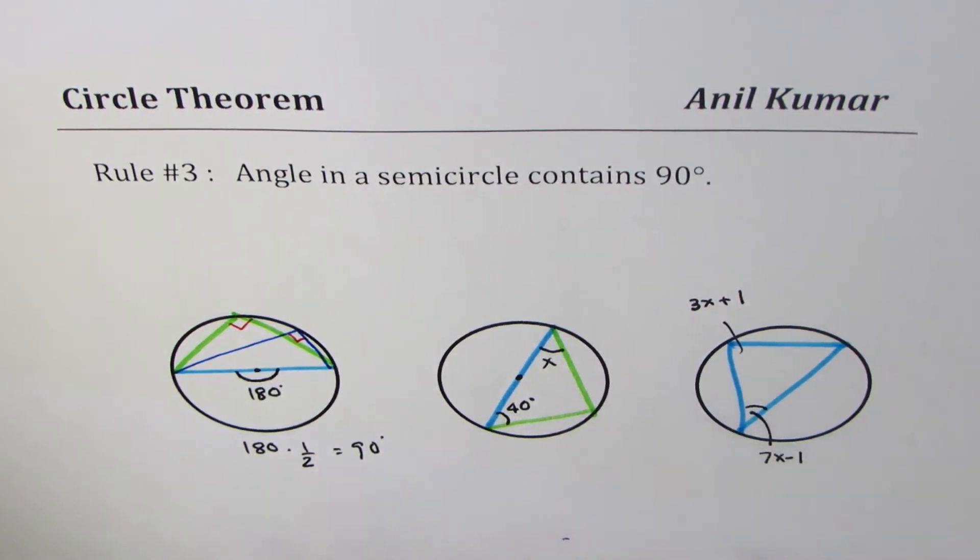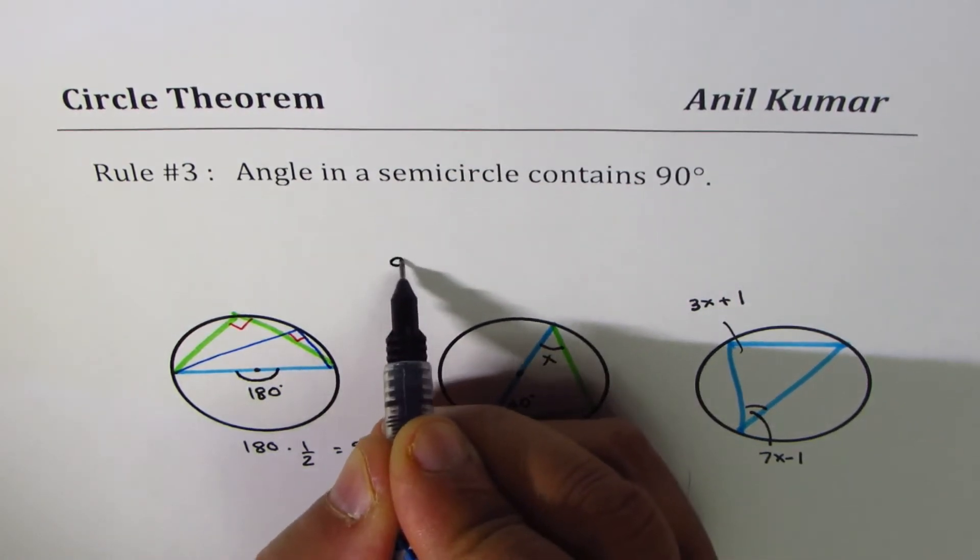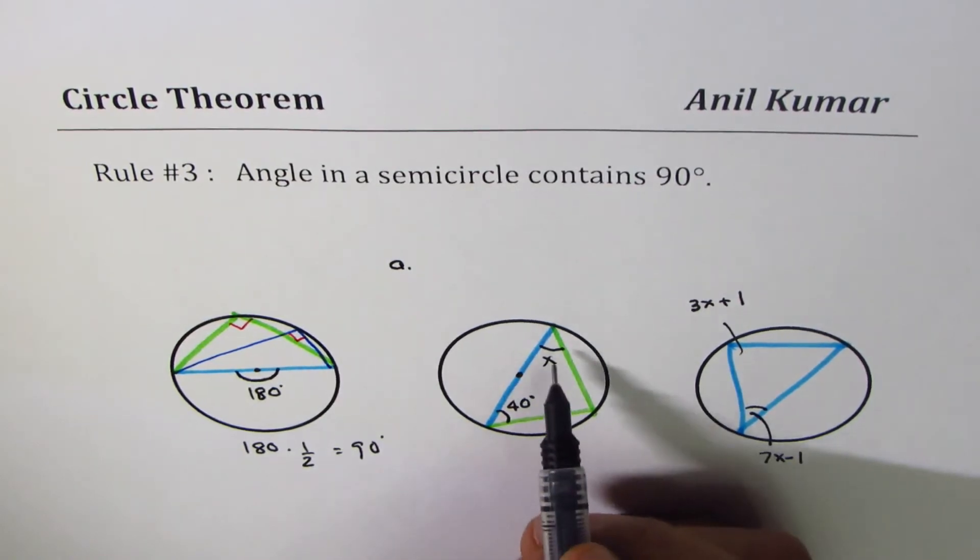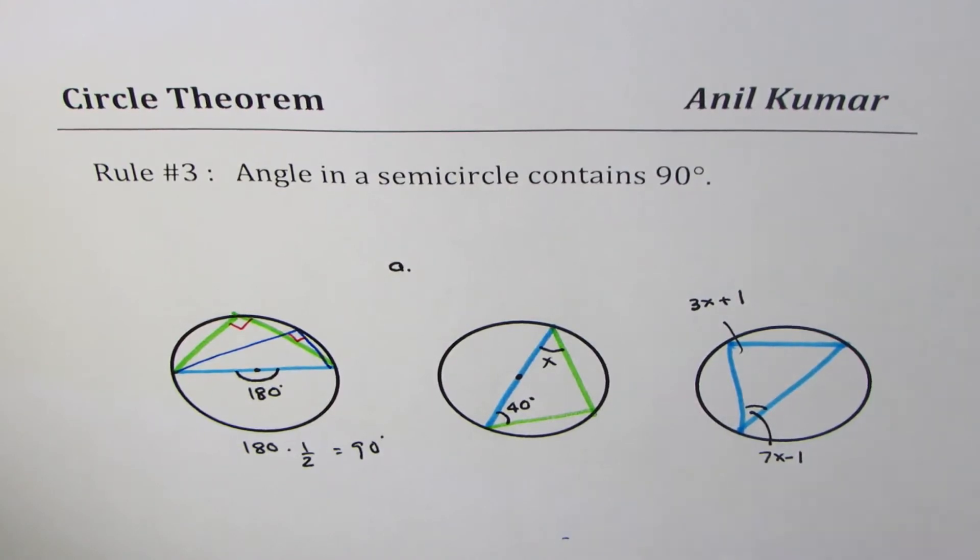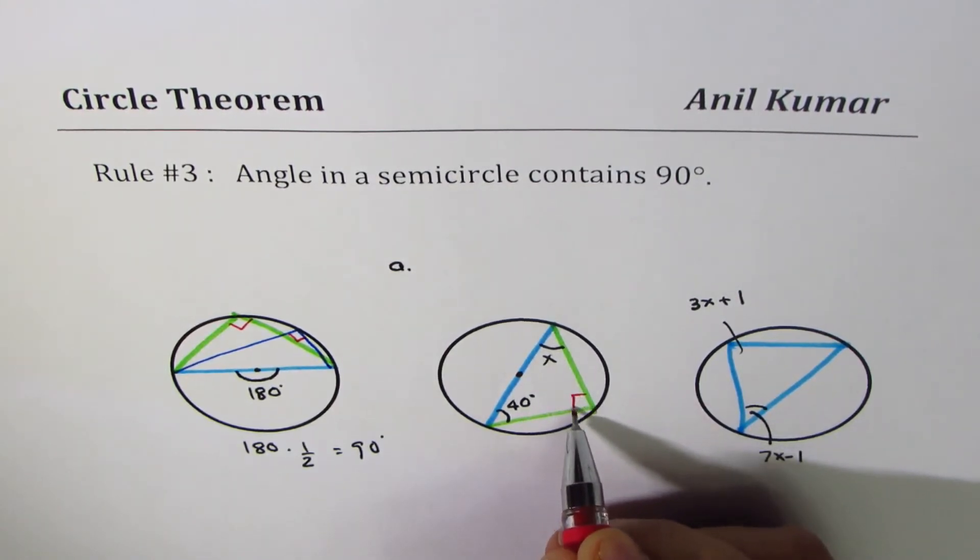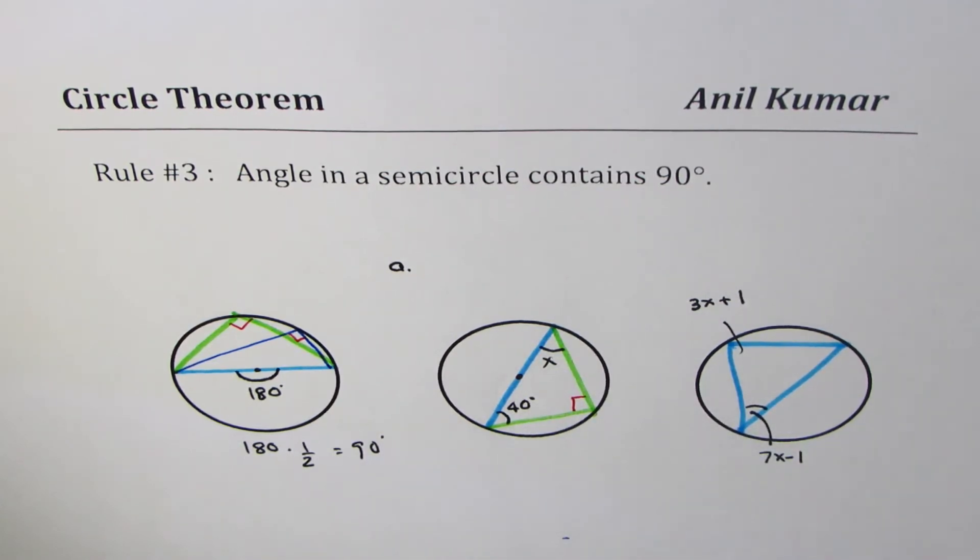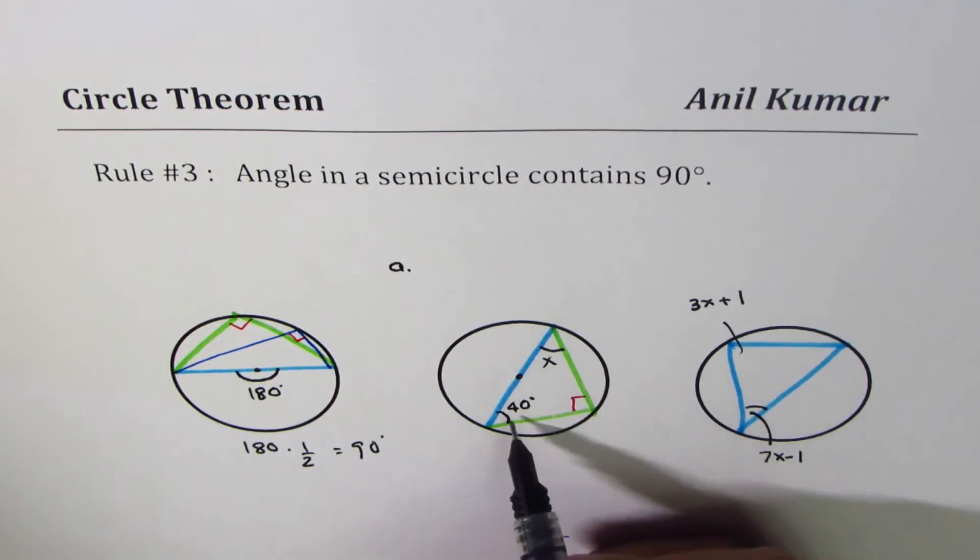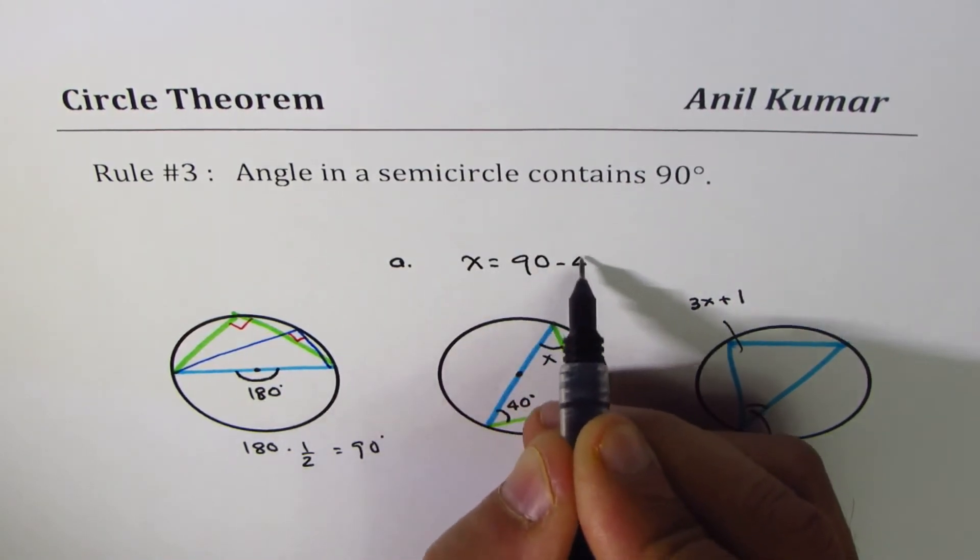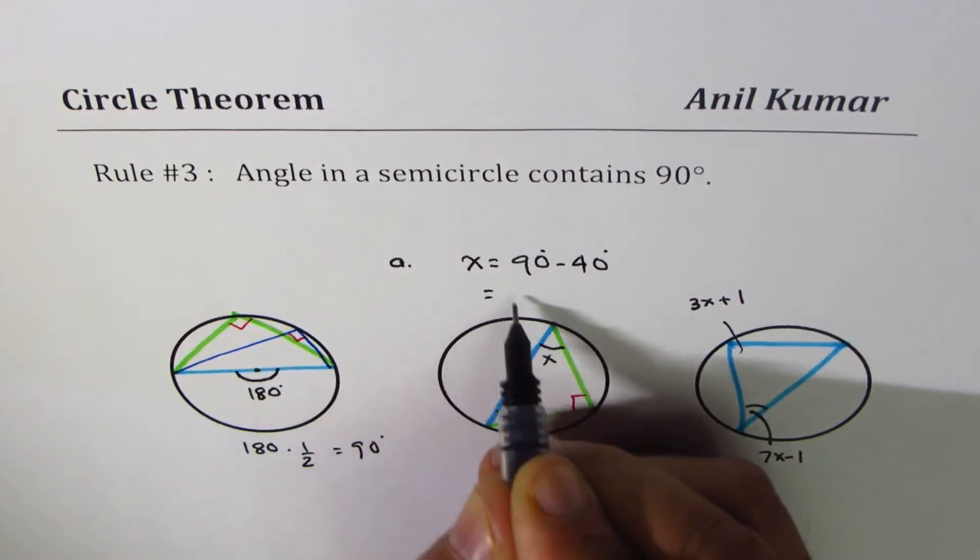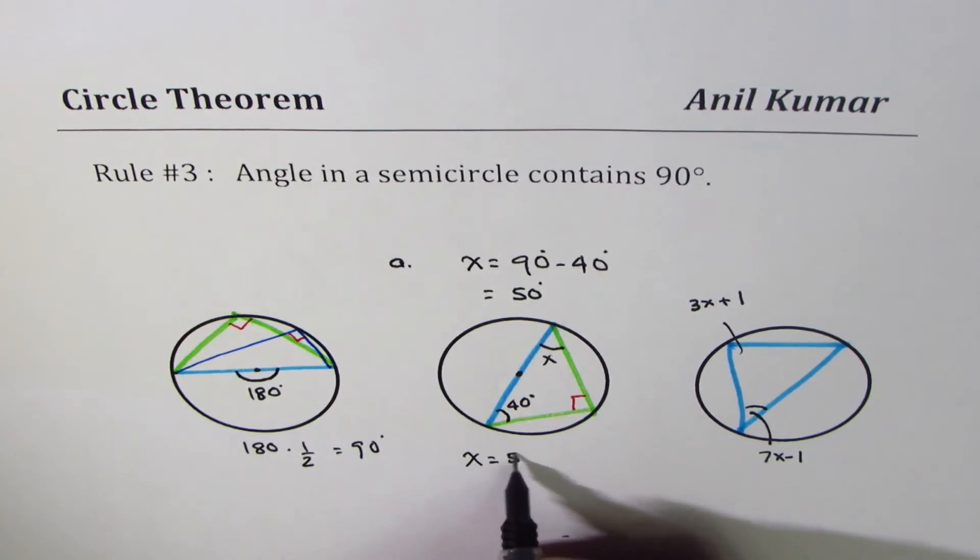Let's begin with question a. Since one of the sides is the diagonal, we know it is a right triangle. The sum of three angles of a right triangle is 180 degrees. Therefore, x plus 40 should be 90 degrees, or x equals 90 minus 40, which is 50 degrees.